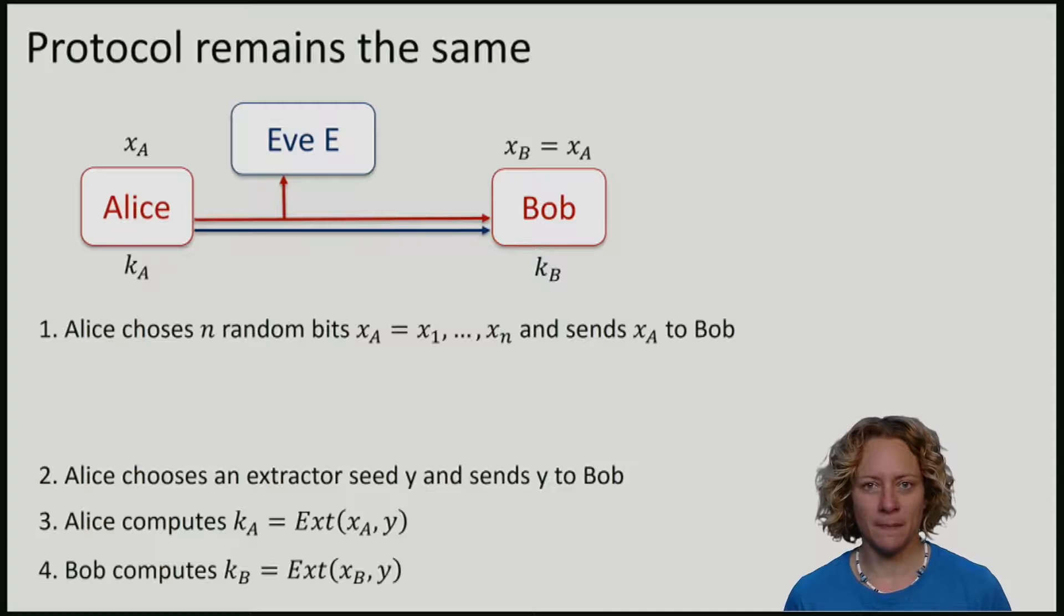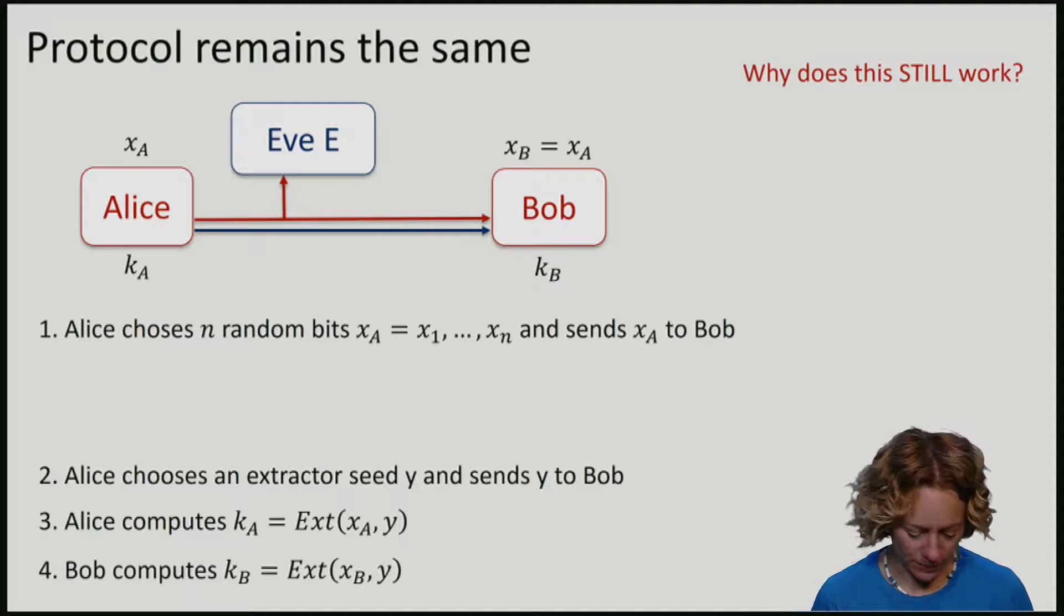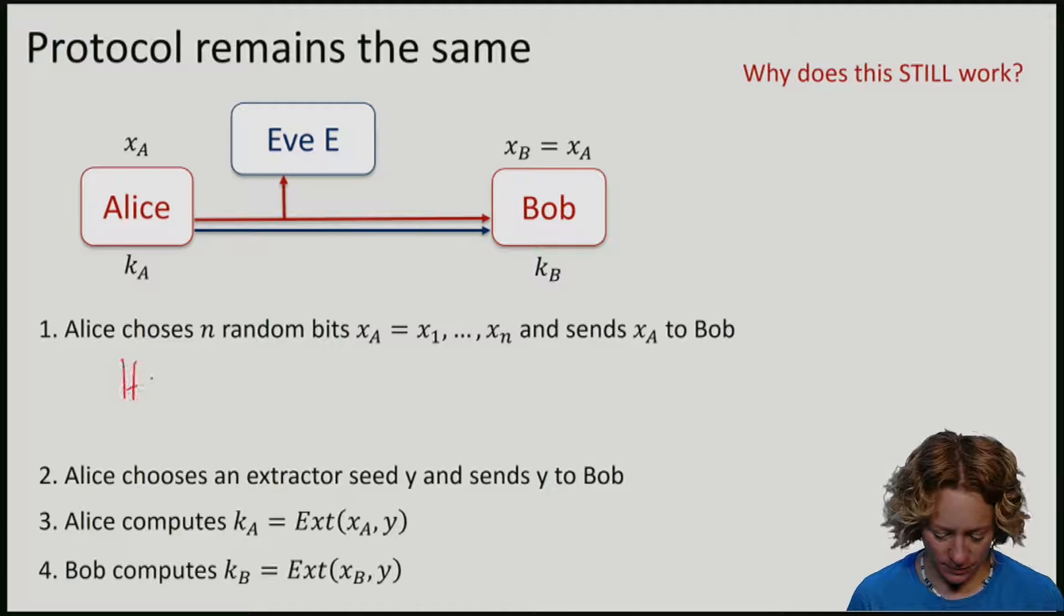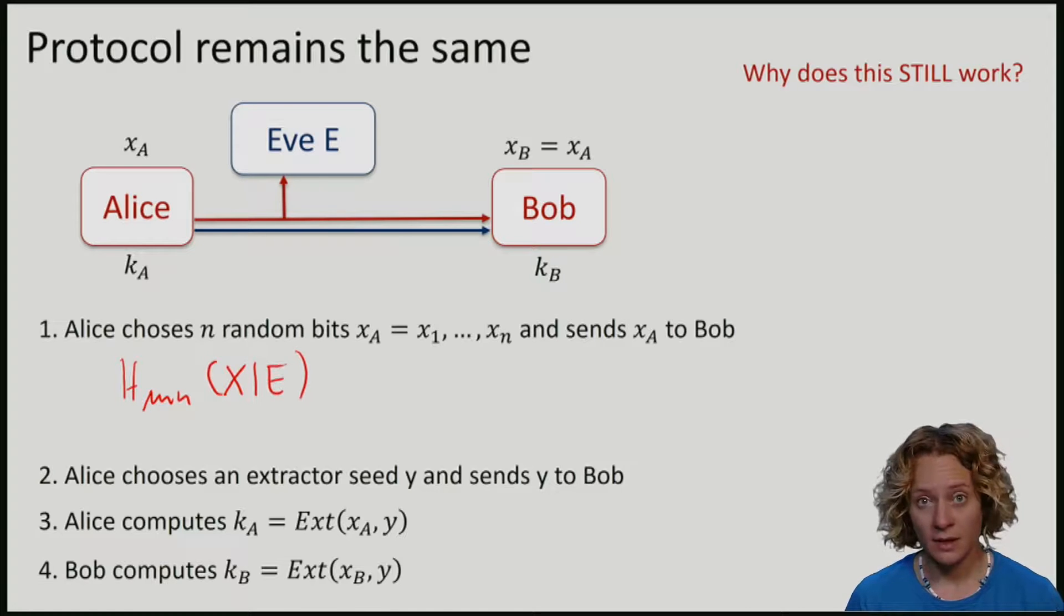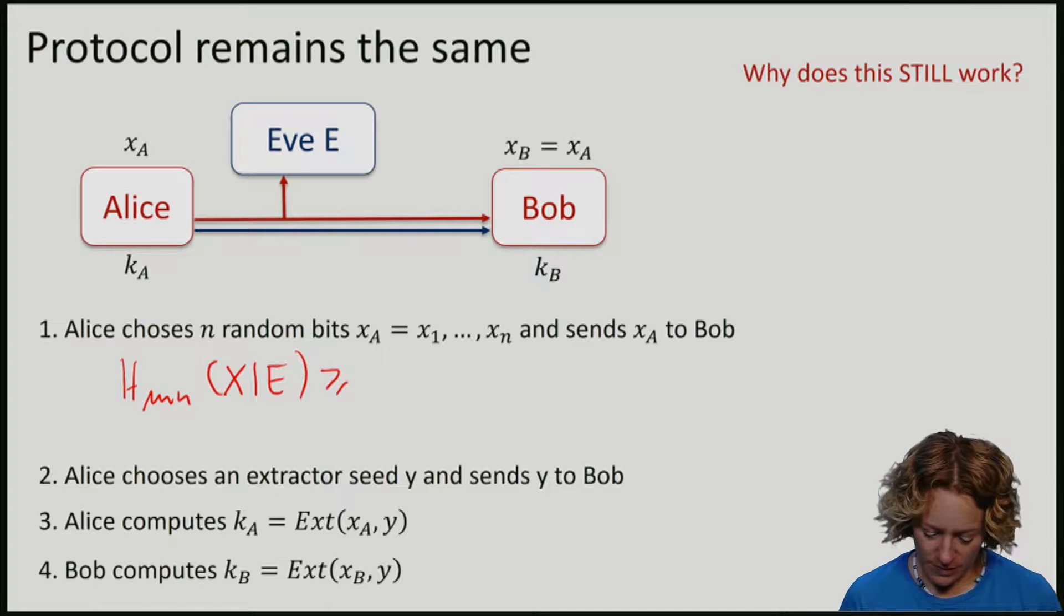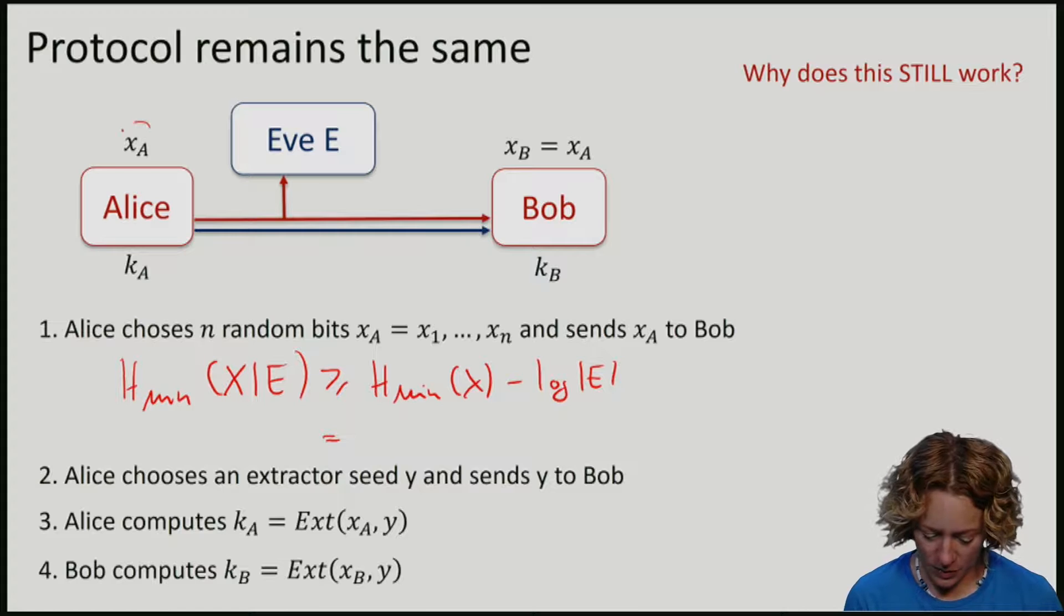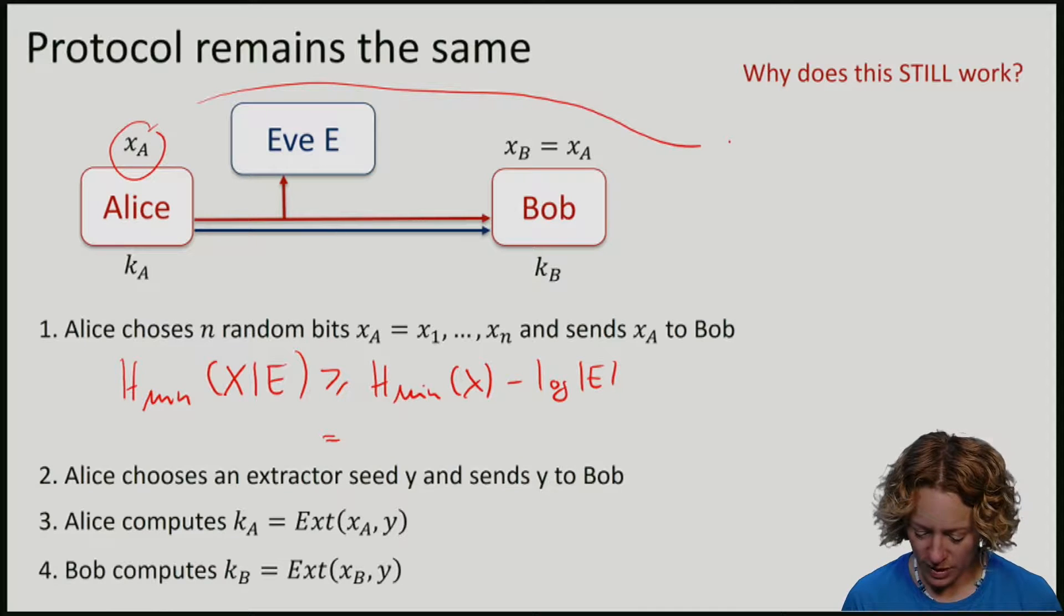Eve's min entropy is now given as follows. Min entropy of x given e is never smaller than the min entropy of x minus log of the size of e. So that's the same as, note the min entropy of a uniformly random string, because Alice chooses all of these strings with equal probability.